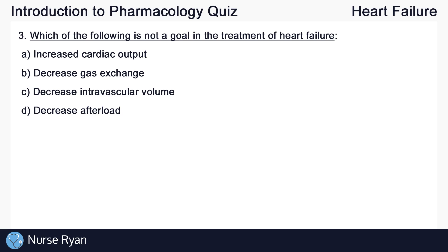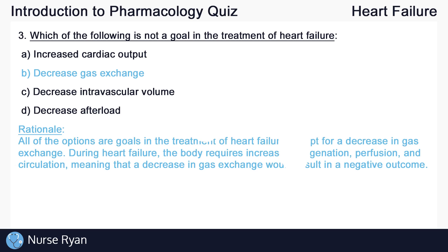Moving on to question number three: which of the following is not a goal in the treatment of heart failure? The answer here is B, decrease gas exchange. All of the options are goals in the treatment of heart failure except for a decrease in gas exchange. During heart failure, the body would require increased oxygenation, perfusion, and circulation, meaning that a decrease in gas exchange would result in a negative outcome.